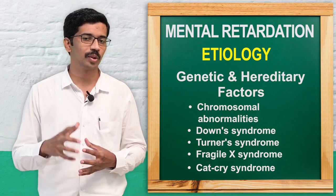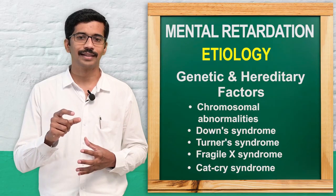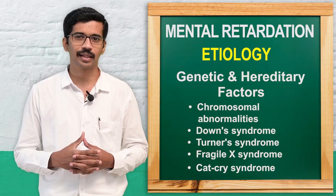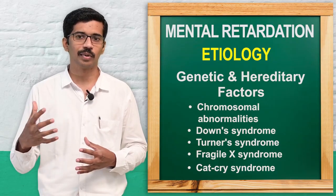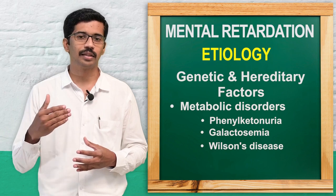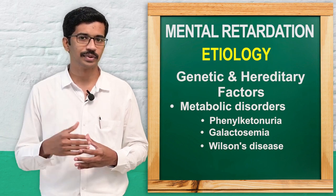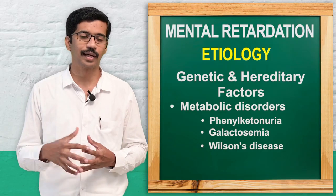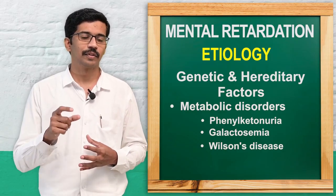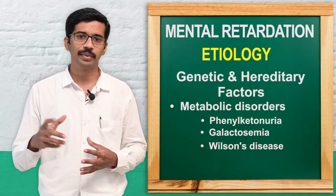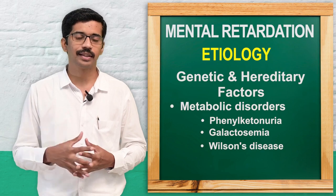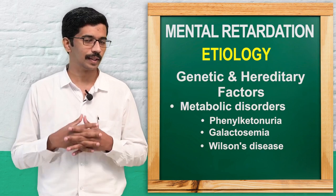Chromosomal causes of mental retardation include Down syndrome, Turner's syndrome, and fragile X chromosome. Then there are inborn errors of metabolism — certain metabolic errors that can cause mental retardation, like phenylketonuria, galactosemia, and Wilms' tumor. These are the common metabolic errors that can cause mental retardation.